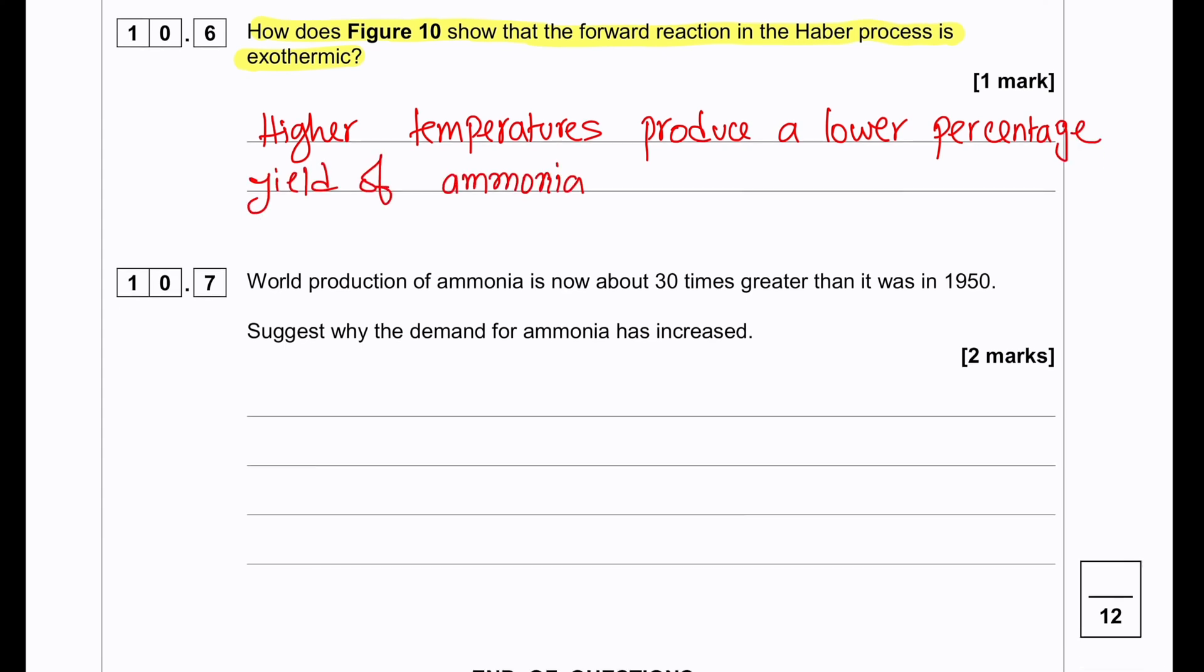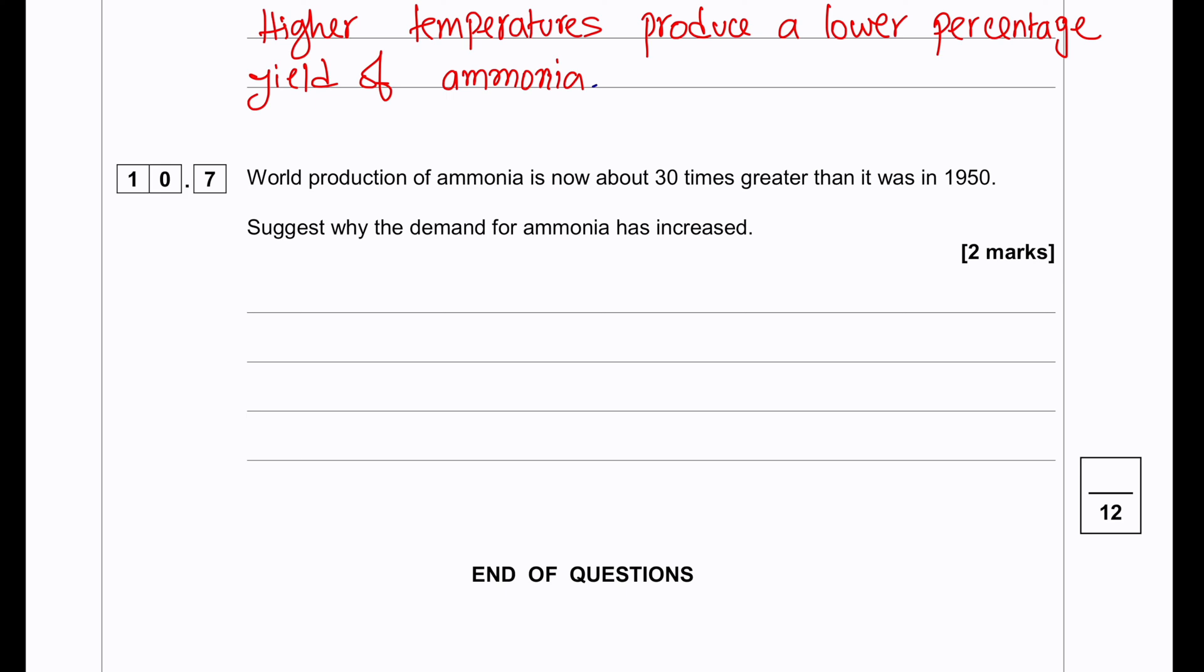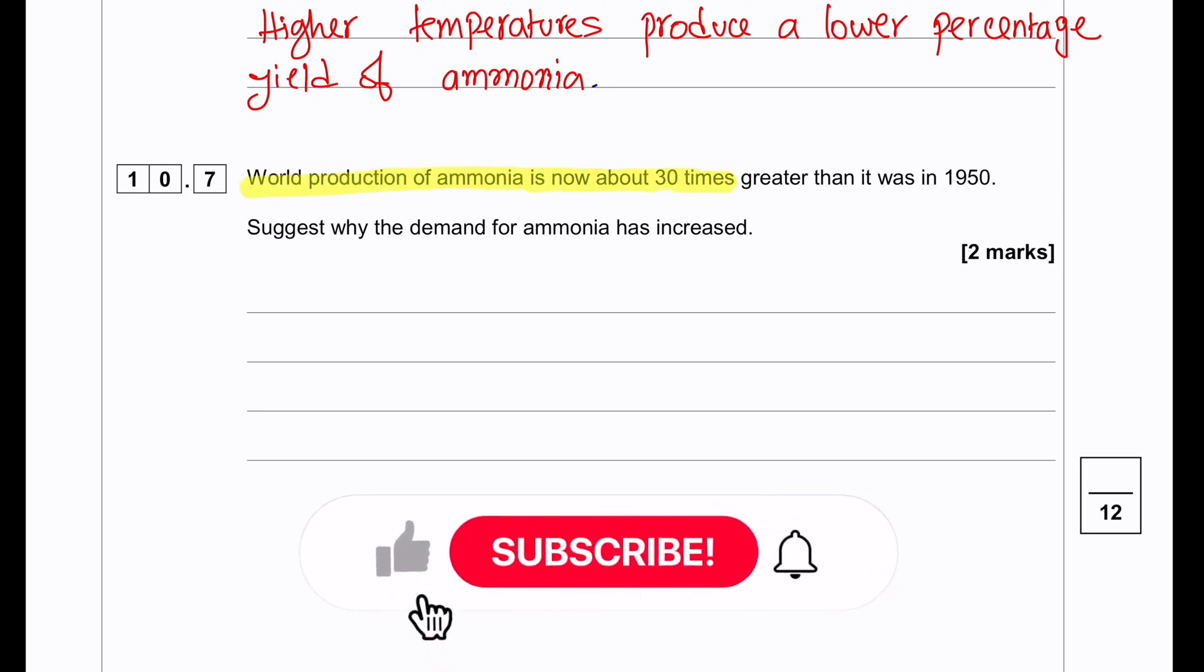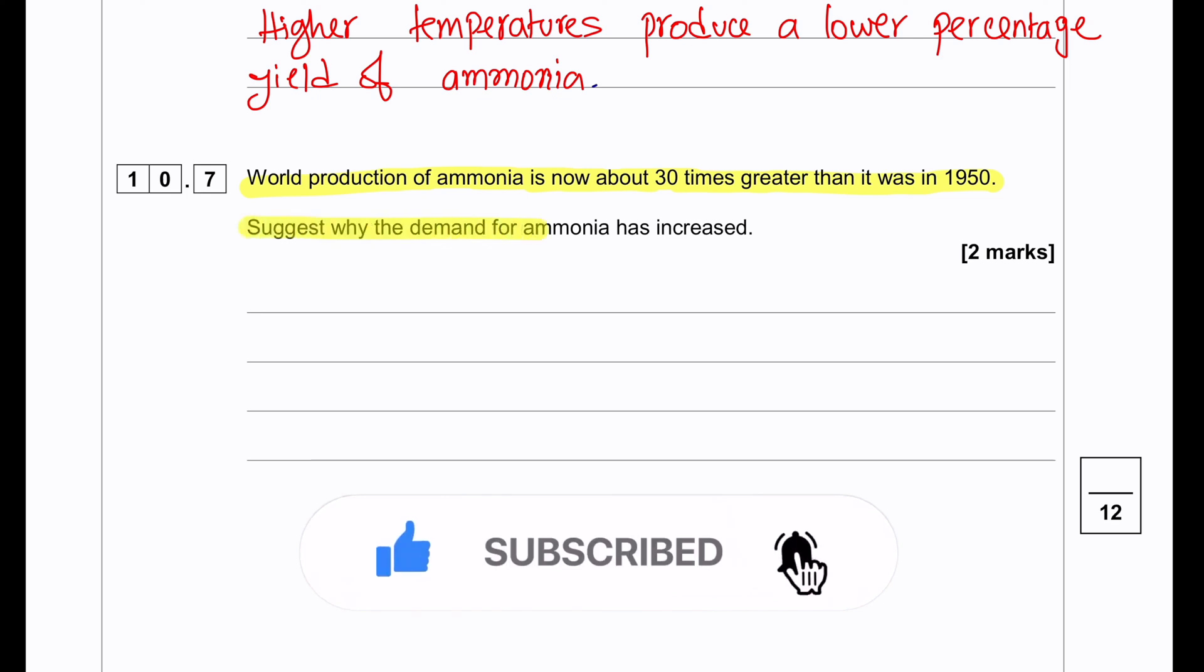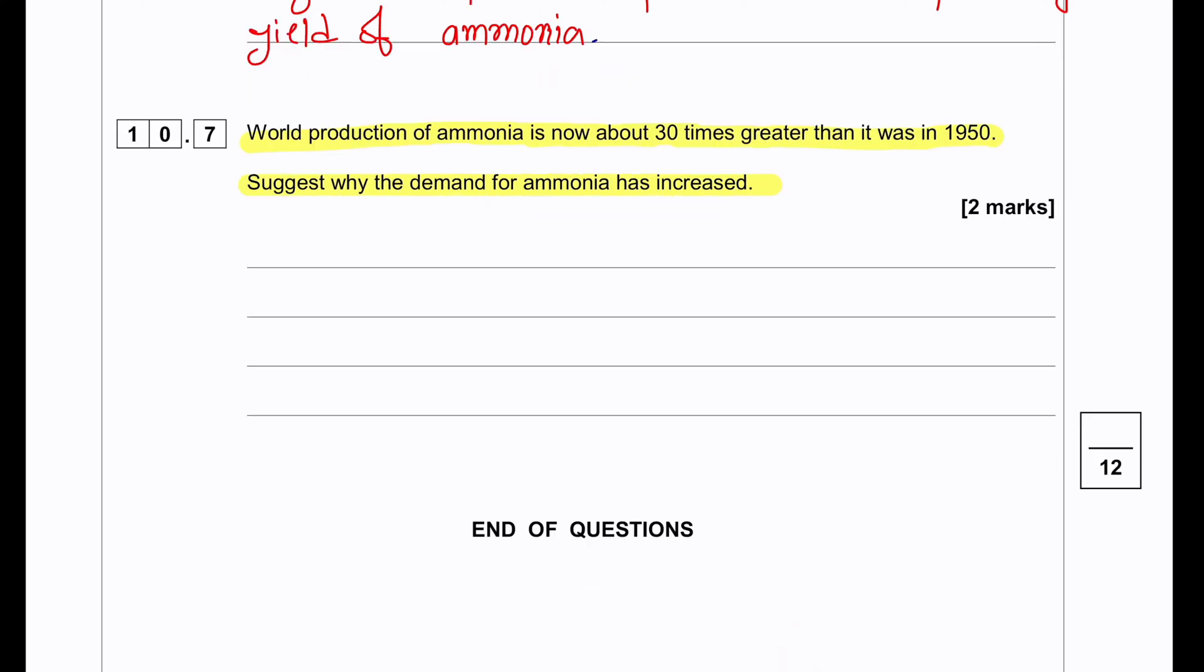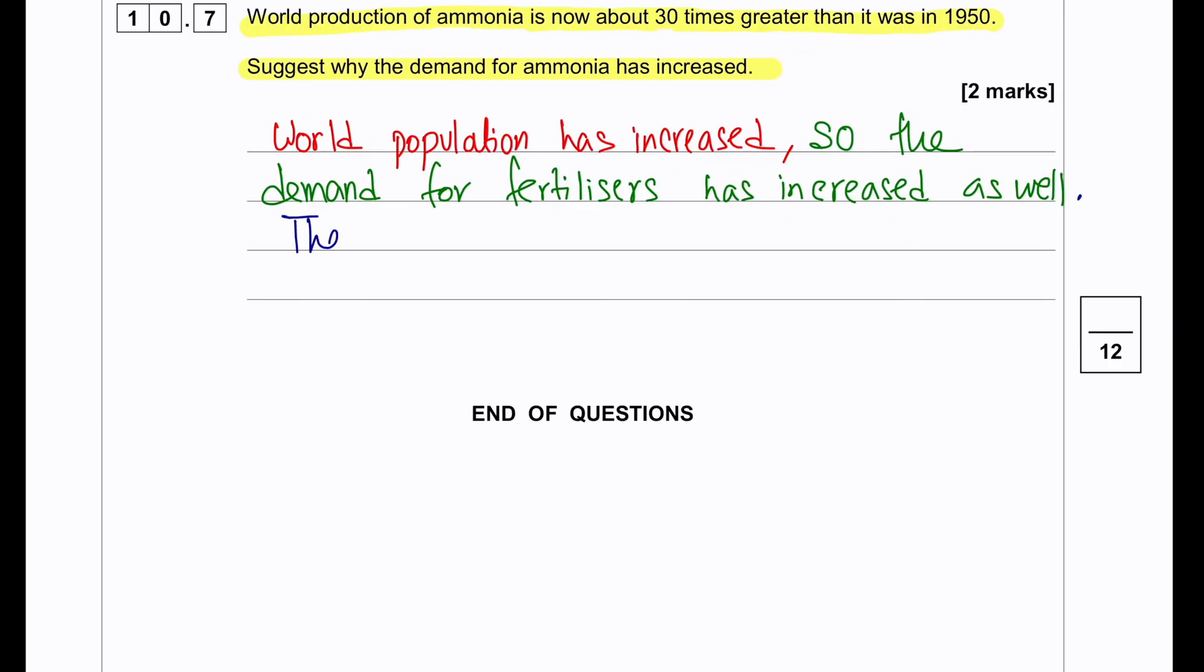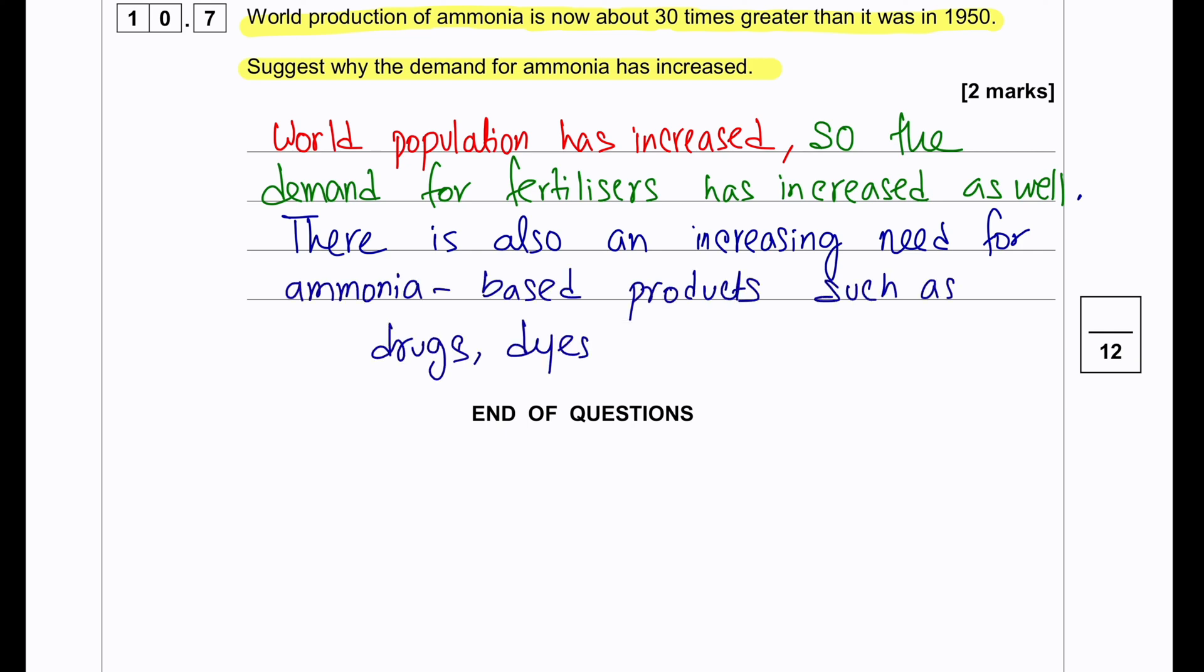World production of ammonia is now about 30 times greater than it was in the 1950s. Suggest why the demand for ammonia has increased. Since the world population has increased, there is a higher demand for fertilizer because more food needs to be produced, and there is also a higher demand for drugs, dyes, and explosives and nitric acid that are made from ammonia. So the production needs to increase as well to meet the demands.